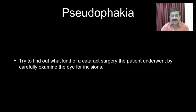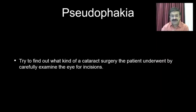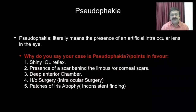It is very important to find out which kind of intraocular lens surgery or cataract extraction has been done to this patient. You will have to pay special attention to the incisions in the cornea, and if you cannot find an incision, try to find if there is any remnant of an incision on the sclera or in the limbus.